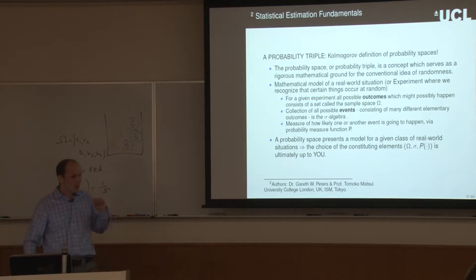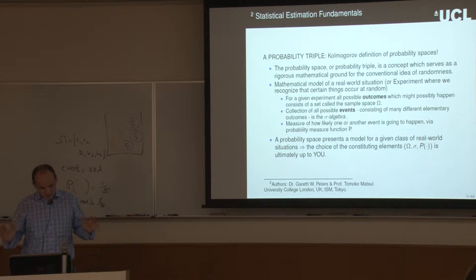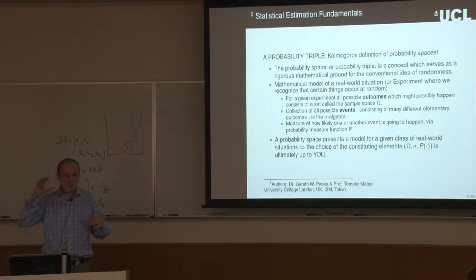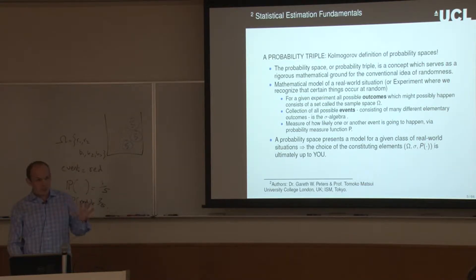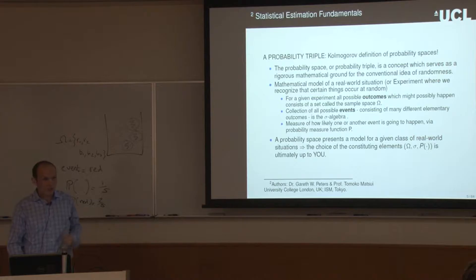In your experimental world, whatever you're applying this to, a probability space represents the model for a real world situation. The choice of these three elements is up to the statistician.